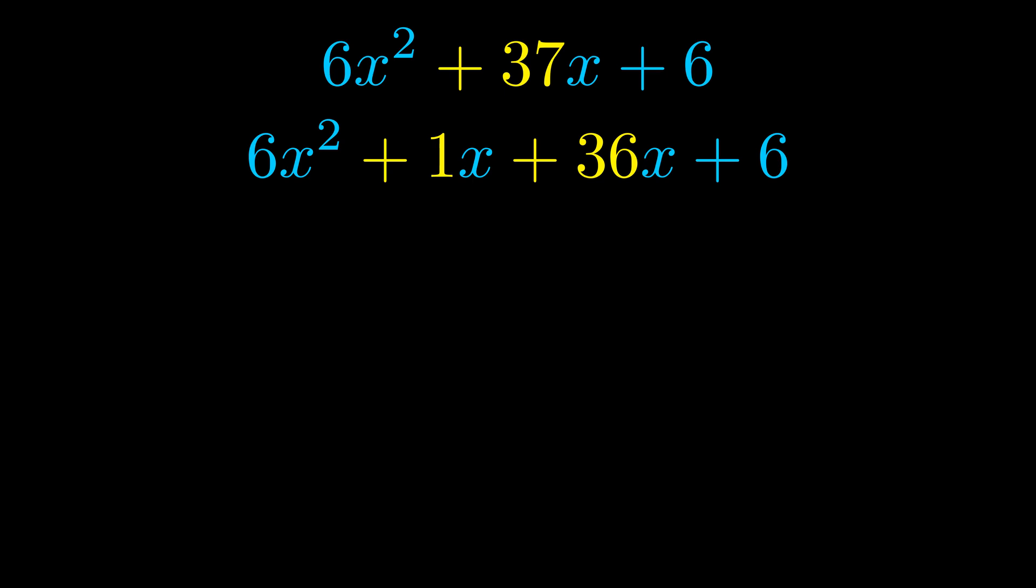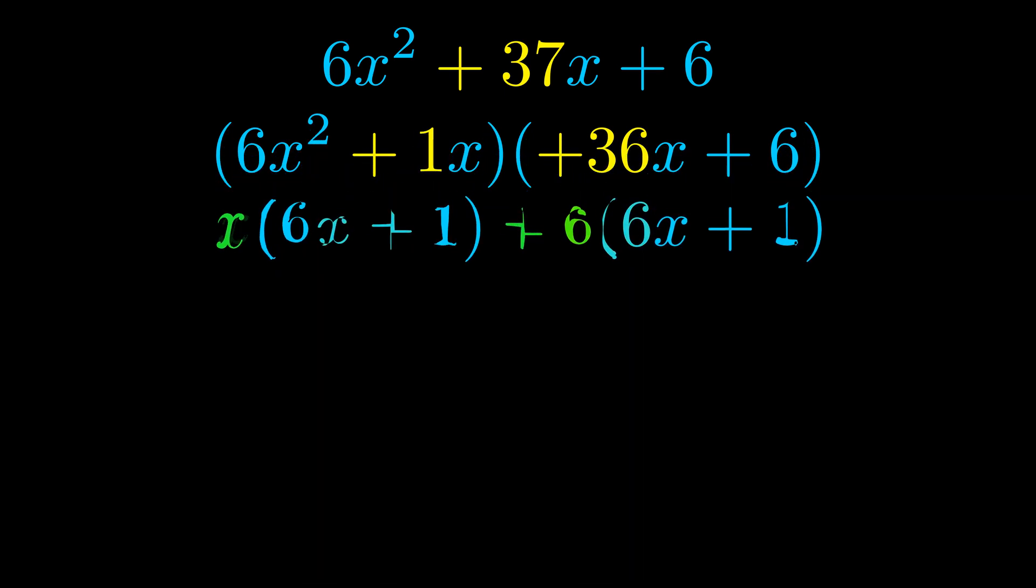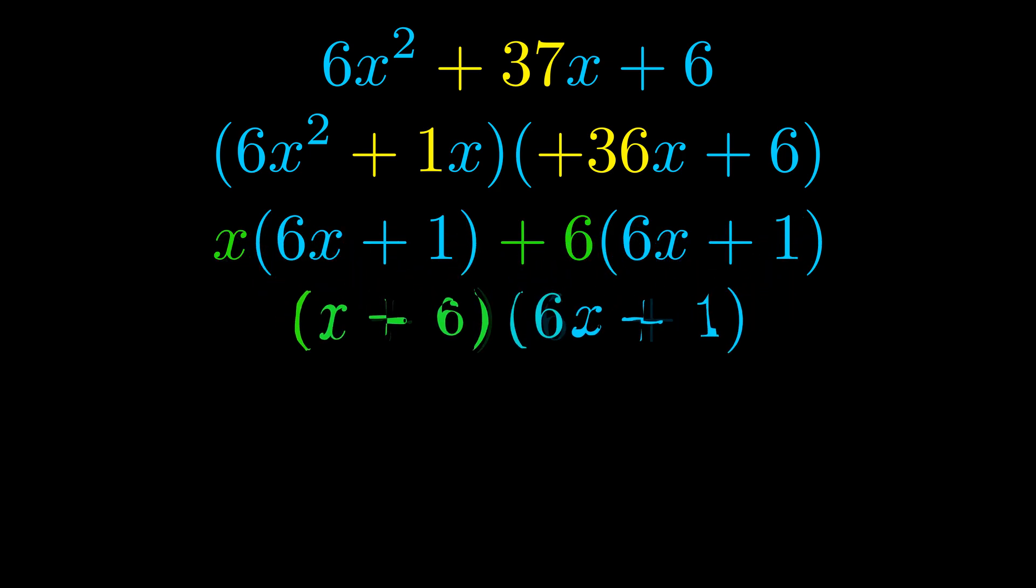Once we've done this we go ahead and put parentheses around the first term and the last term, and we do that so that we can take the greatest common factor out of both terms. We can see the greatest common factor is now outside in green. Notice also how what remains inside of the parentheses is the same in both cases. The blue values are the same.